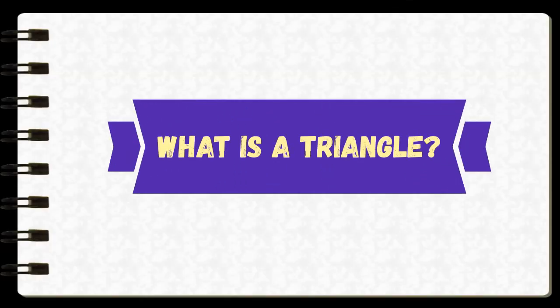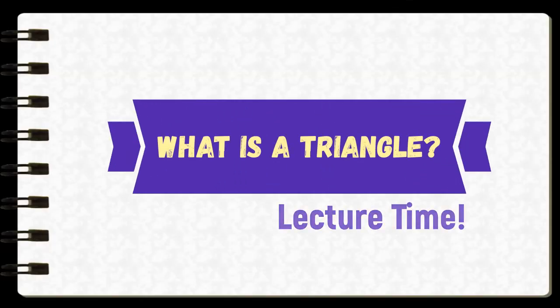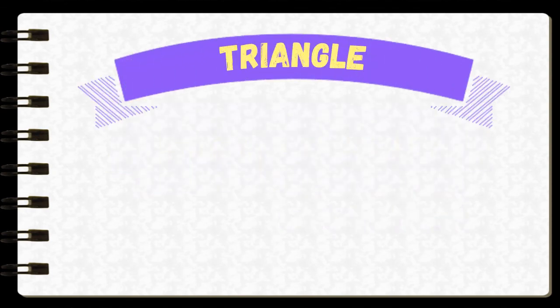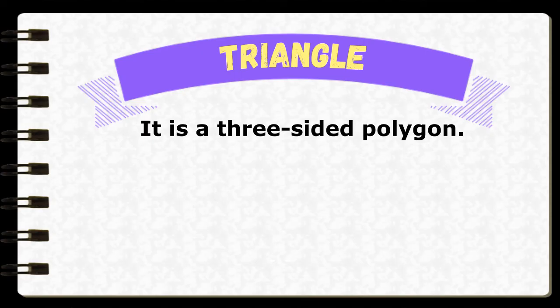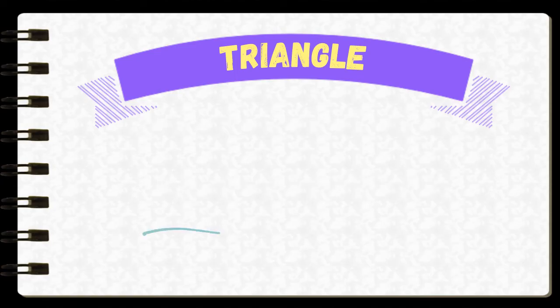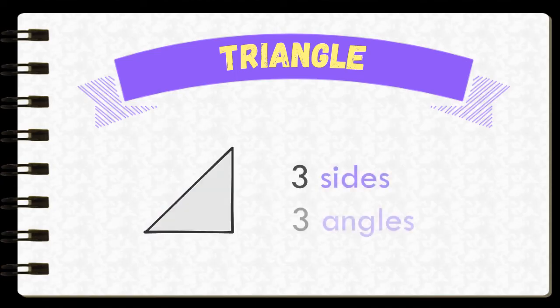So what is a triangle? A triangle is a three-sided polygon. Do you know that it is also called a trigon? As you know, every triangle has three sides and three angles — that is where it gets the name.